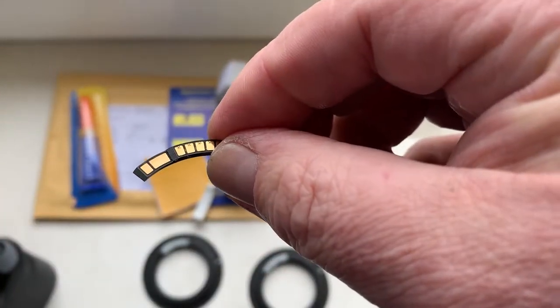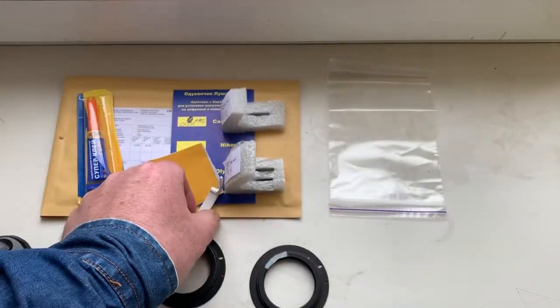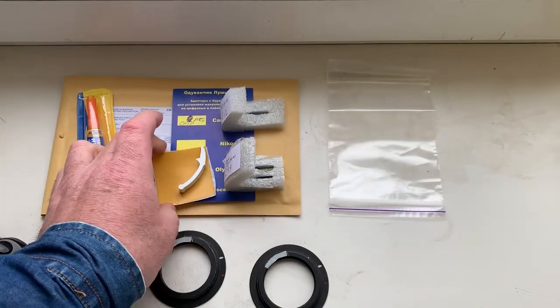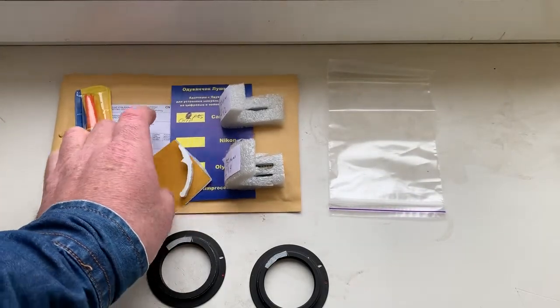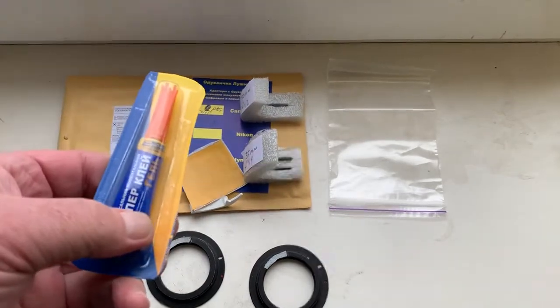The chip number two. This is caliber. This is special double-sided adhesive tape. And this is super glue gel.